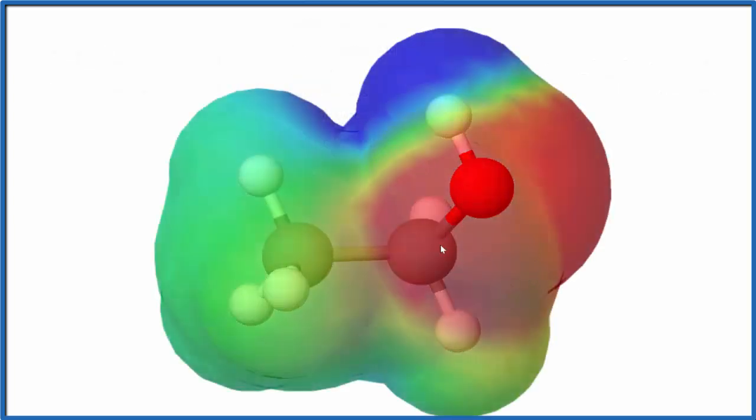This is the electrostatic surface of the molecule. The red area is more negative. The blue, that's more positive.